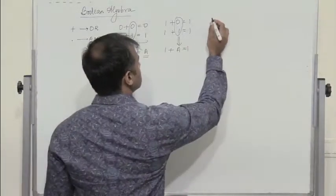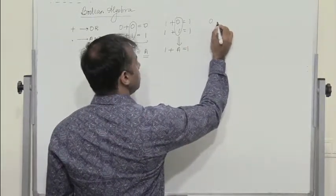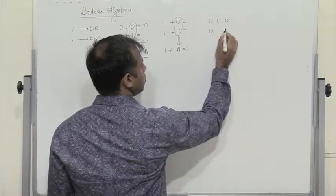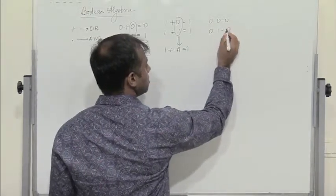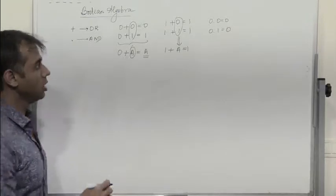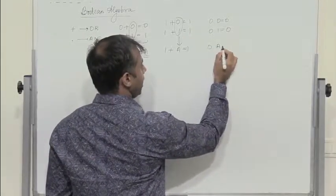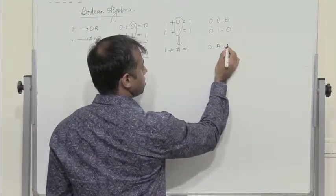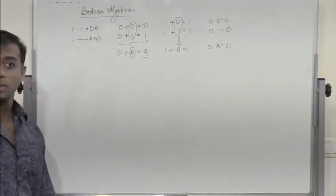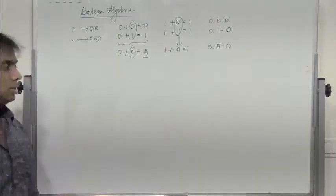Now for AND: 0 into 0 is 0. 0 into 1 is also 0. So we can conclude that 0 into A is always 0. When you multiply 0 with anything, it is 0.